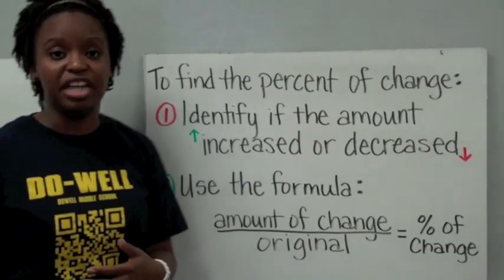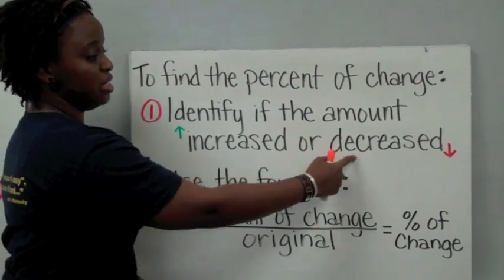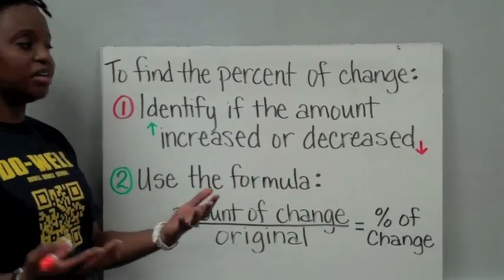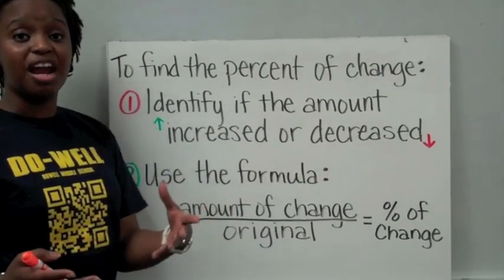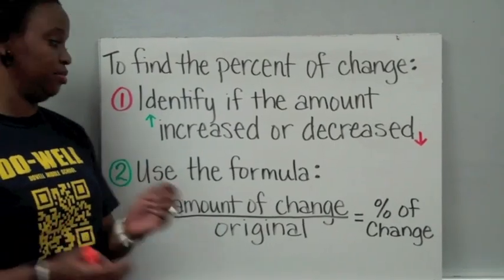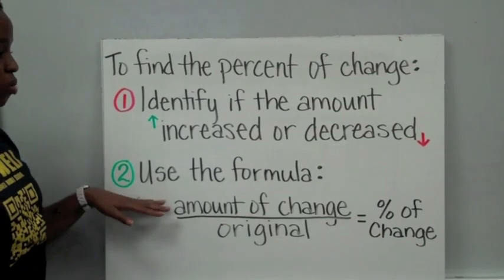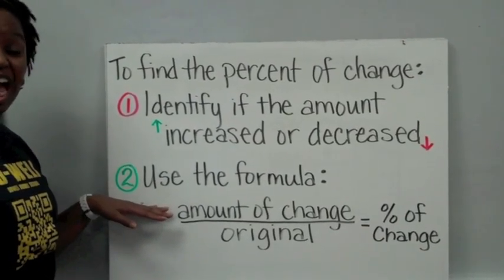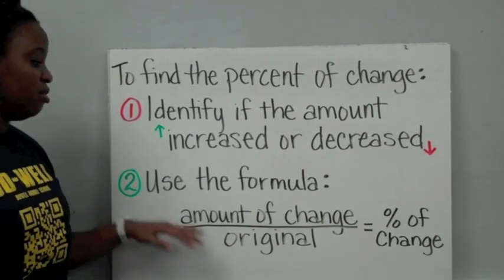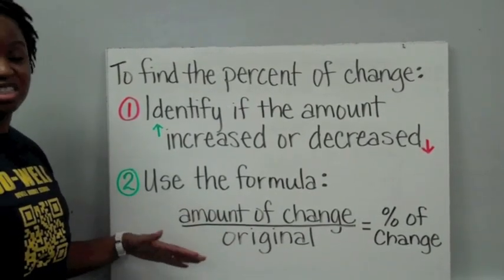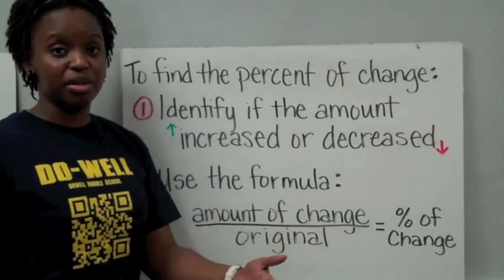To find percent of change, the first thing that we've got to do is identify if the amount increased or decreased. So if the amount went up, obviously it's an increase. If the amount went down, obviously it's a decrease. And we're comparing that always to the original amount or where it started out. Then once we know whether it's an increase or decrease, we can use a simple formula where we place the amount of change, how much it changed, which we can find by subtracting the amounts over the original amount. We know that a fraction or a ratio is just a division problem, so we're dividing those to find our percent of change. So let's get into a couple of examples.